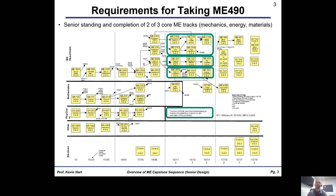Before going further, it's useful to know whether you can get into senior design. If you sign up, you would first register for ME 490, the first course which takes place in the fall. The prerequisites are senior standing and completion of at least two of the three core ME tracks. Highlighted on the curriculum flowchart with green bubbles are those three core tracks: the mechanics track, the energy track, and the materials track. Two of those three must be completed to sign up for ME 490.